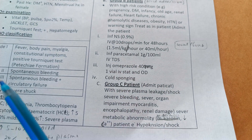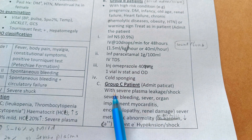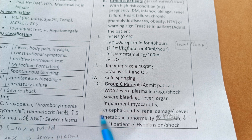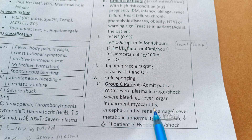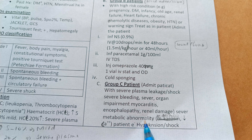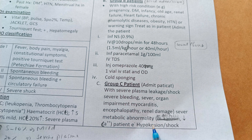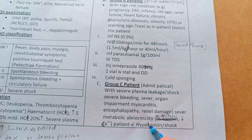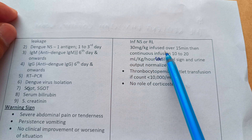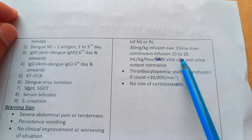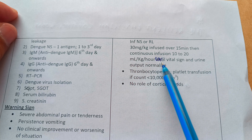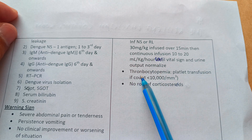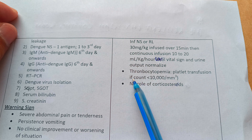Group C patients: admit the patient. These patients have severe plasma leakage — HCT increased by more than 20% — or are in shock, have severe bleeding, or severe organ impairment such as myocarditis, encephalopathy, renal damage, severe metabolic acidosis, decreased calcium, or hypotension and shock. Treatment: infusion of saline or Ringer's lactate 30 ml/kg infused over 15 minutes, then give continuous fluid until vital signs normalize. If platelet count is less than 10,000, give platelet transfusion. There is no role of corticosteroids.